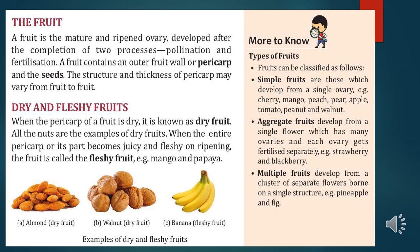A fruit contains an outer fruit wall called pericarp and the seeds. The structure and thickness of pericarp may vary from fruit to fruit. Dry fruits — when the pericarp is dry, it is a dry fruit, examples: almonds, walnut, cashew nut. Fleshy fruits — when the pericarp is fleshy and juicy, examples: banana, mango, lychee.